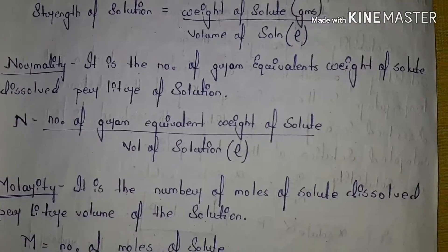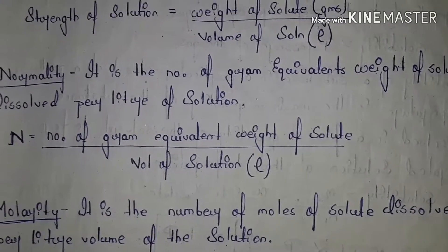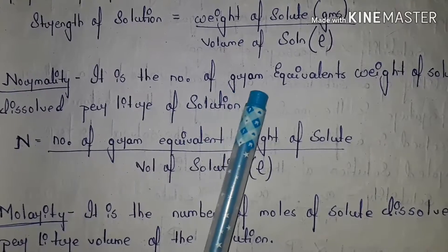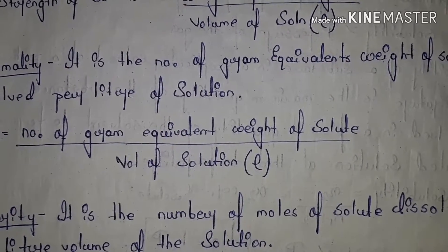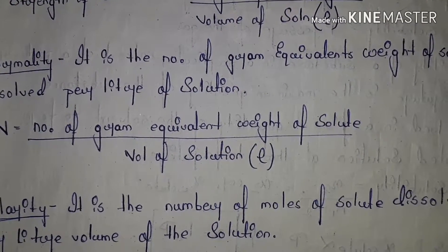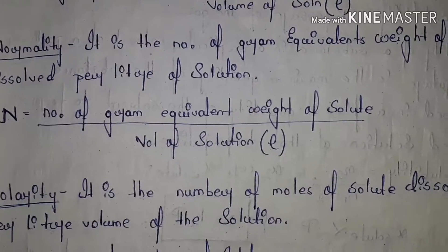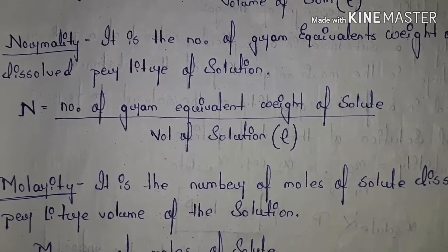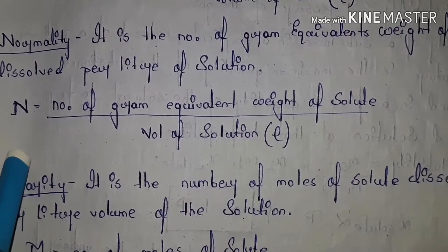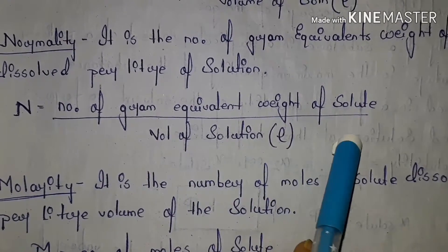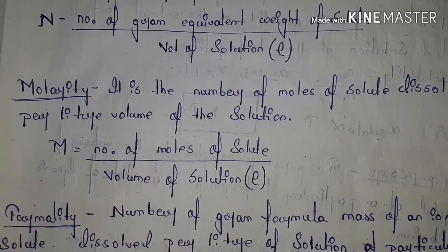Normality — these definitions we also studied in stoichiometry, so I hope you know them since they were in class 11 syllabus. Normality: it is the number of gram equivalent weights of solute dissolved per liter of solution. We studied gram equivalent weight in class 11. Normality (N) = number of gram equivalent weights of solute (in grams) / volume of solution in liters. Please learn this formula.